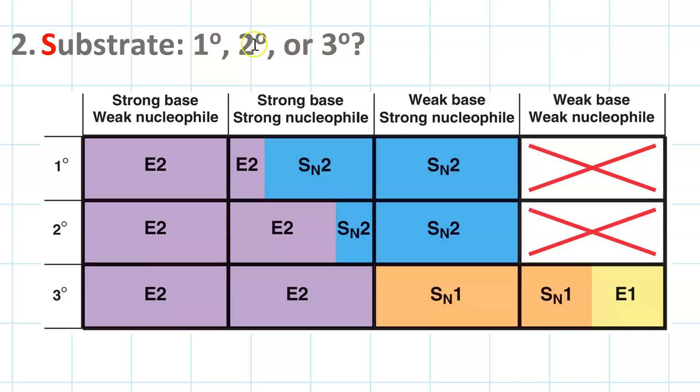Assuming our substrate has a good leaving group, the next question we ask ourselves: Is it primary, secondary, or tertiary? In other words, what's the degree of substitution in the substrate? If you have something, if your reagent is a strong base, regardless of whether your substrate is primary, secondary, or tertiary, you will always get E2 and nothing but E2.